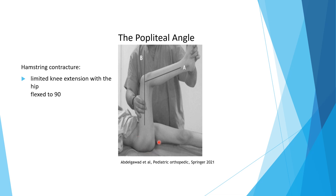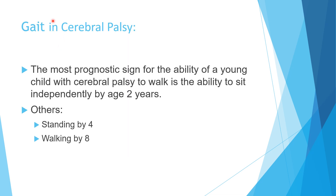The hamstring muscle crosses both hip and knee, causing hip extension and knee flexion. Hamstring contracture is measured by the popliteal angle: with the child supine, flex the hip to 90 degrees to put stretch on the hamstring, then assess the angle between the lower leg and vertical. This angle represents the lack of knee extension — the popliteal angle.